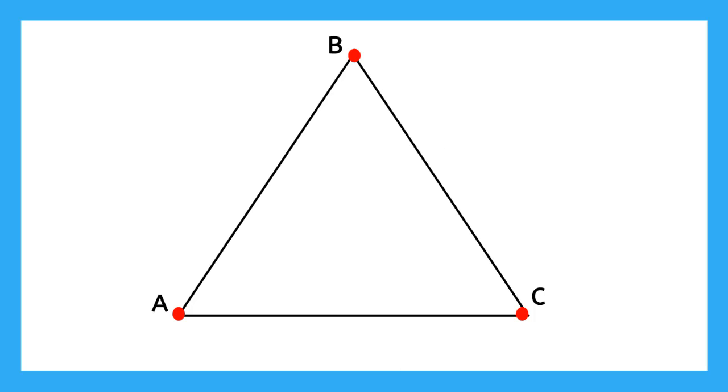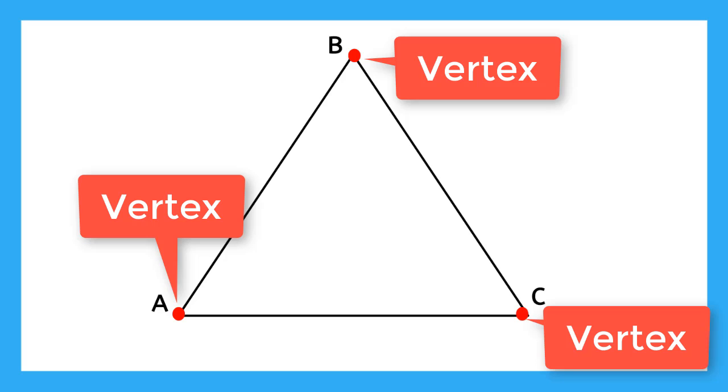Where the line segments intersect is called a vertex. We can name the vertices by the points, point A, point B, and point C.